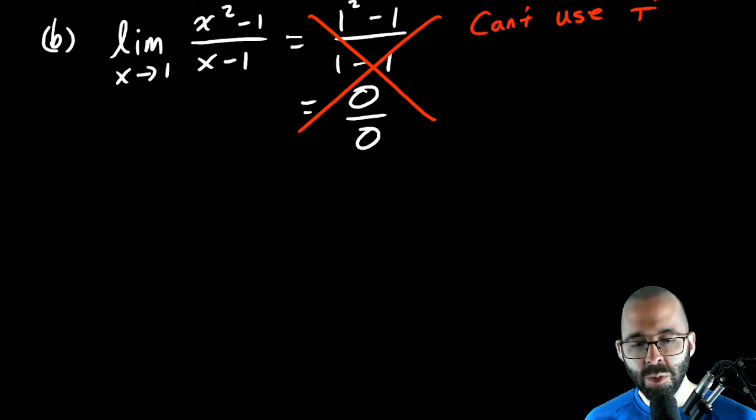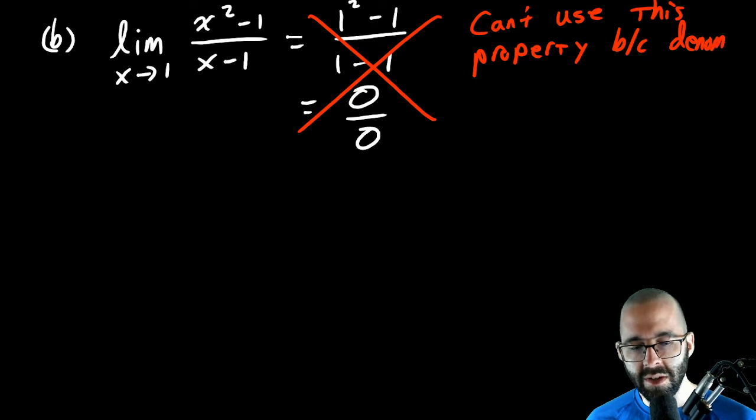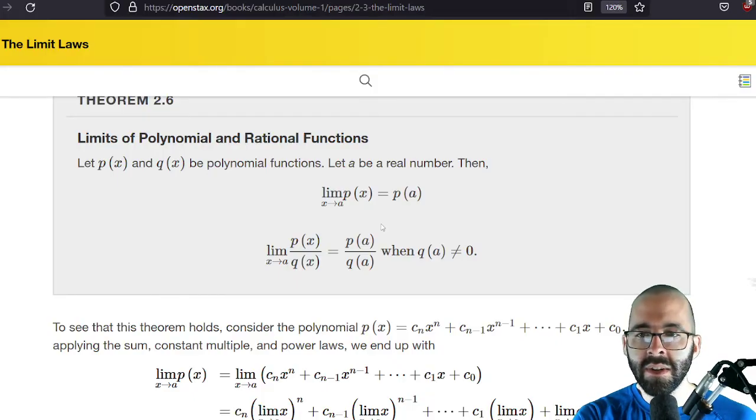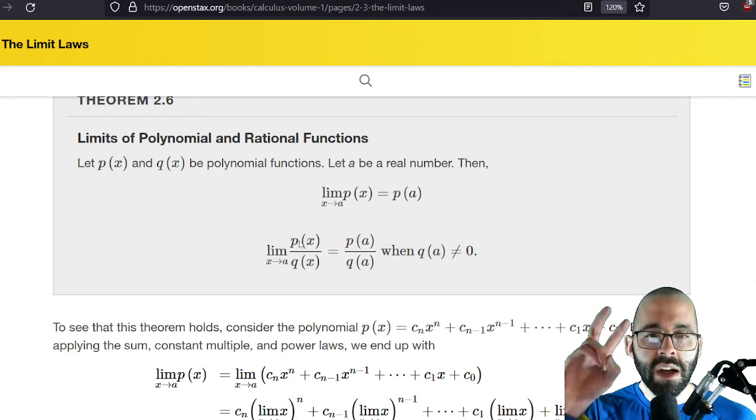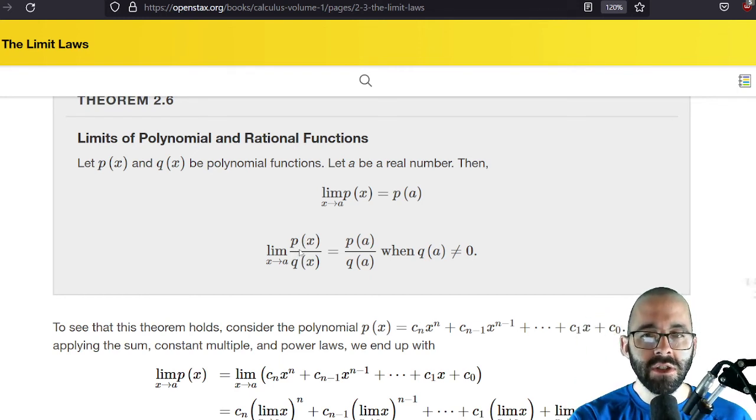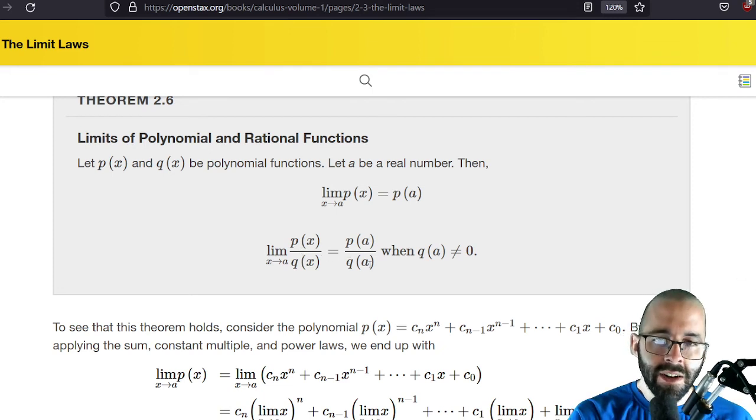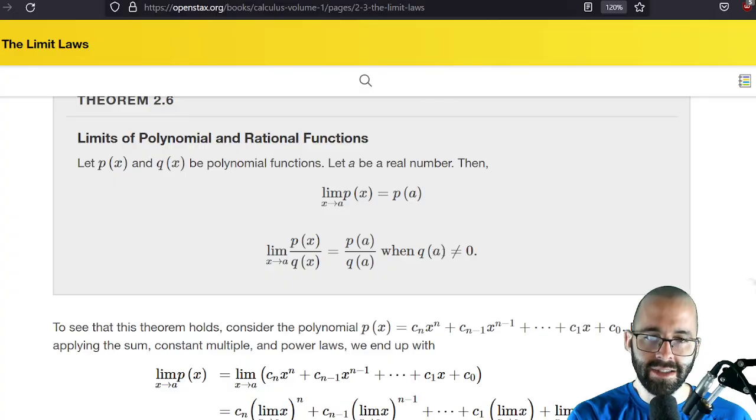We can't use this. Can't use this property because the denominator equals zero. This property, right, this theorem—you can only use direct substitution, you can only plug in for a rational function that limit if the function value on the denominator is not equal to zero.